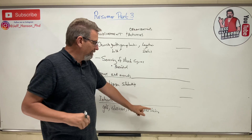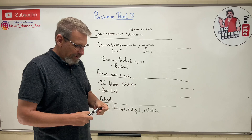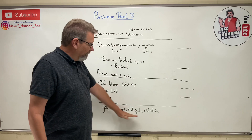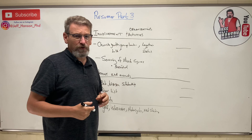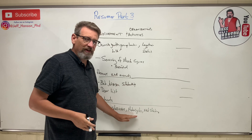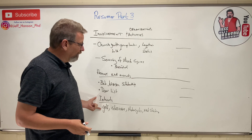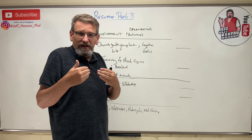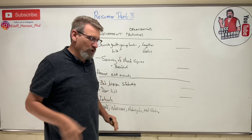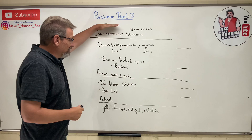Don't put something like 'crocheting sweaters for my cat' — stick to things other people typically enjoy. This section is nothing more than a conversation starter in an interview. If they see you like classic cars, they might ask what you drive and you're into a real conversation instead of canned interview questions like 'if you were an animal, what would you be?' If your resume is packed, this is the one to leave off — but it makes interviews feel more like a conversation.